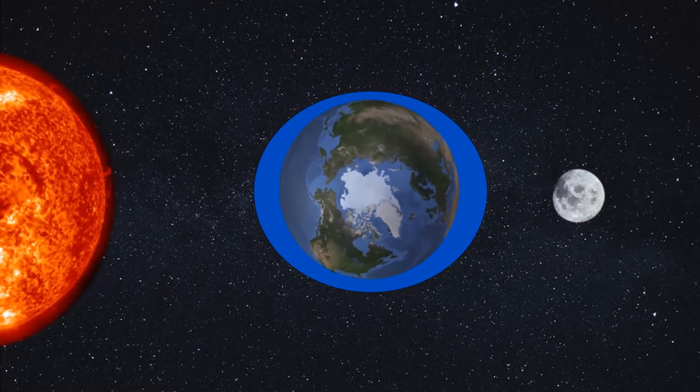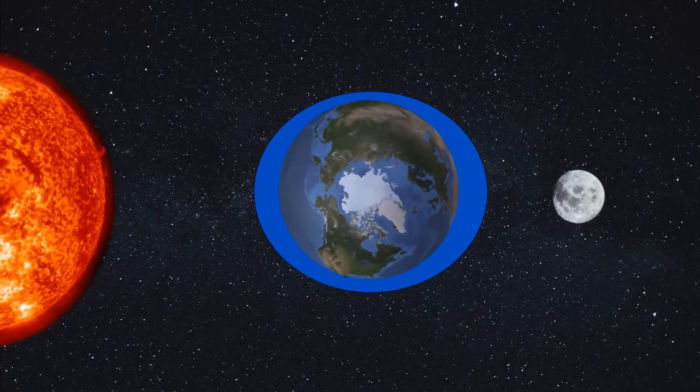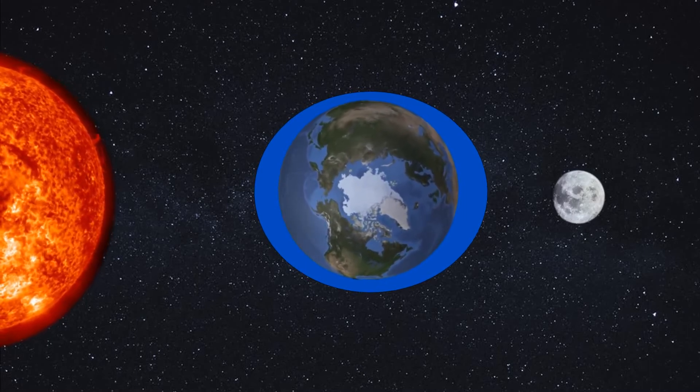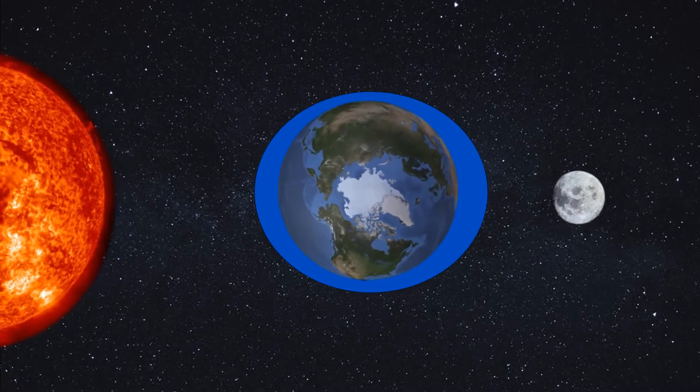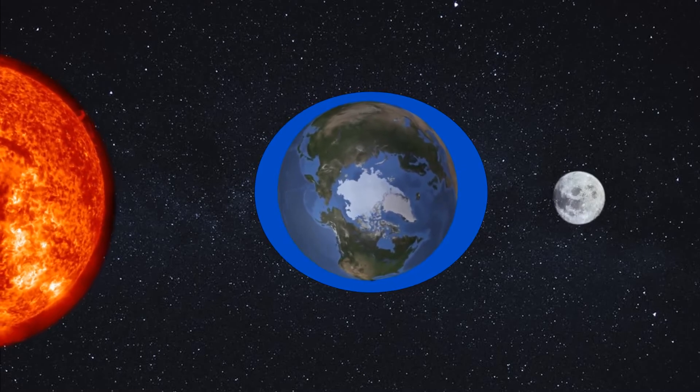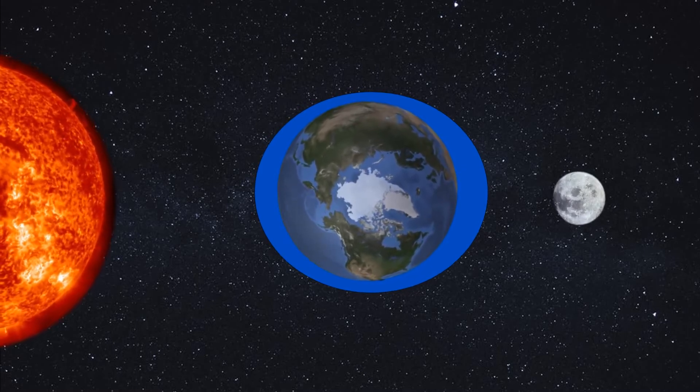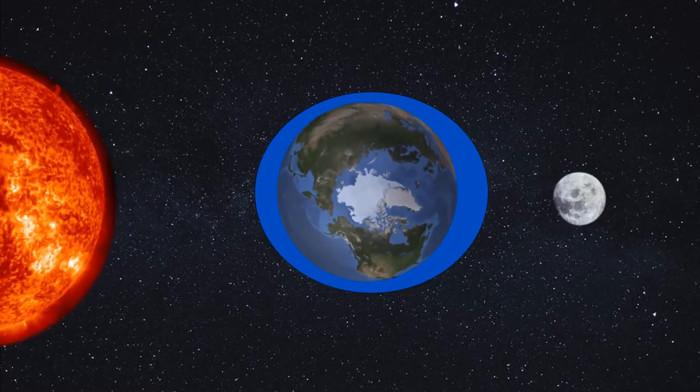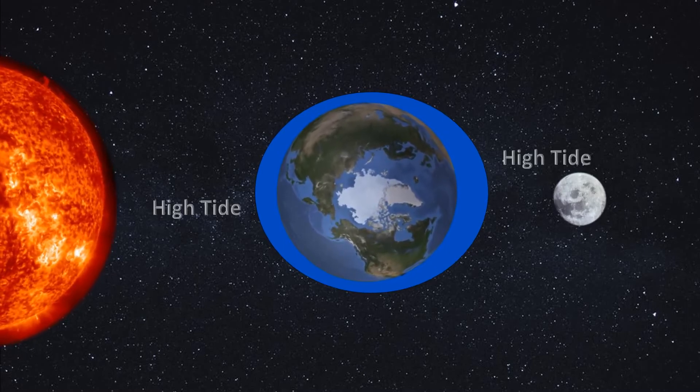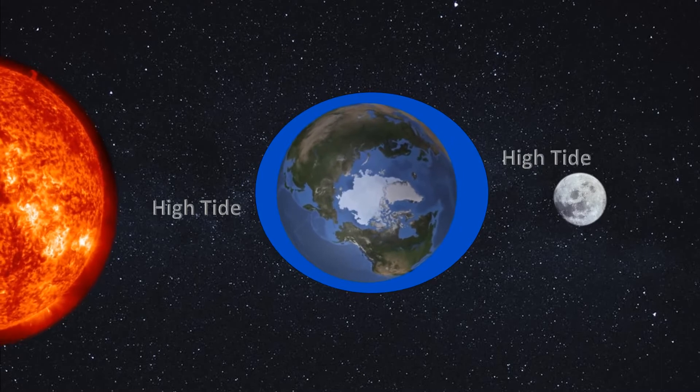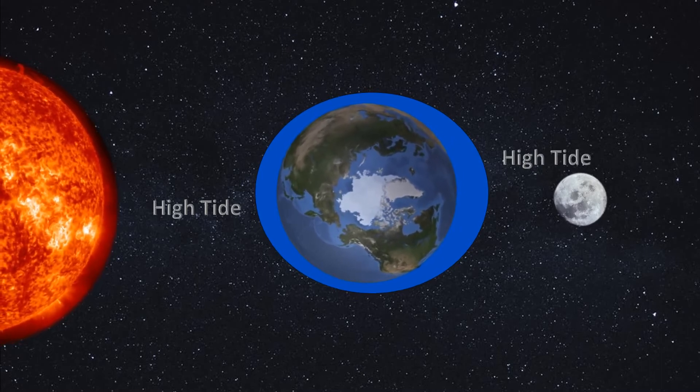The Earth rotates on its own axis once every 24 hours. This rotation causes different parts of the planet to enter and leave these bumps, causing the water levels to rise and fall throughout the day. At the extremes where the tide is high it is known as high tide and the extremes where the tide is low is known as low tide.